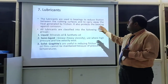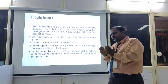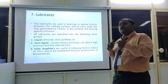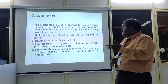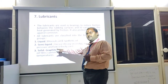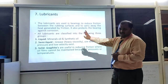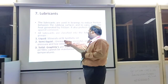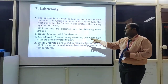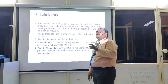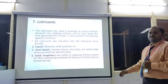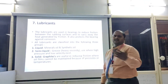Coming to lubricants: lubricants are used to reduce friction between moving parts. Because of the friction in sliding contact bearings, heat is formed, and to reduce that heat we add lubricant between the two moving parts. There are three types of lubricants: liquid (mineral oils and synthetic oils), semi-liquid (grease, which has heavy viscosity and is used where high pressure and low velocity exist), and solid (most commonly graphite, which is useful in reducing friction where oil films cannot be maintained due to pressure or temperature).